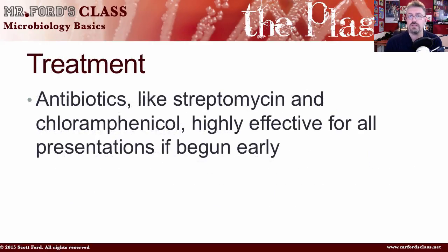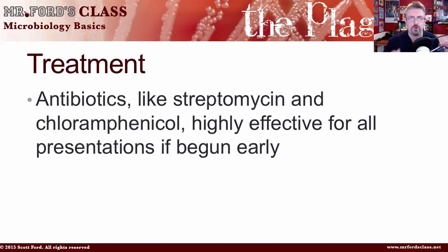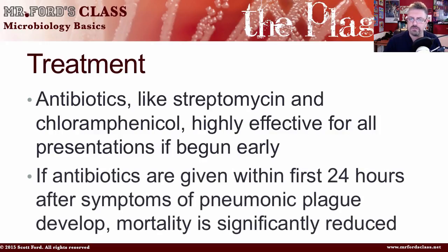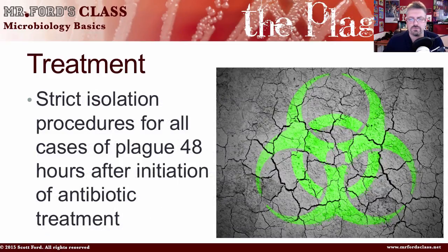The treatment for Yersinia pestis, being a bacterium, is antibiotics. If the right antibiotics are used, they are highly effective for all presentations — if begun early. If antibiotics are given within the first 24 hours after symptoms of pneumonic plague develop, mortality is significantly reduced. Strict isolation procedures are required for all cases of plague for 48 hours after initiation of antibiotic treatment to prevent further spread.